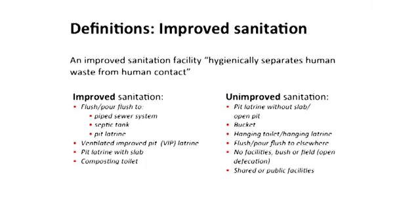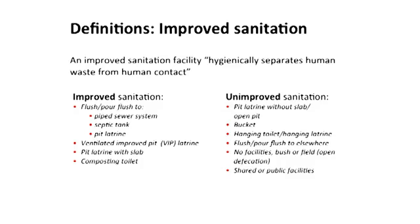For improved sanitation, we include a flush or pour-flush toilet connected to a piped sewer system, or a pour-flush toilet connected to a septic tank or a pit latrine. An improved ventilated pit latrine is also considered improved. On the unimproved side, we include pit latrines without slabs or open pits, bucket latrines, hanging toilets, and pour-flush toilets that don't discharge to a sewer system or septic tank. Households that don't have any sanitation systems at all are recorded as open defecation. We also include shared or public toilets among the unimproved sanitation services.